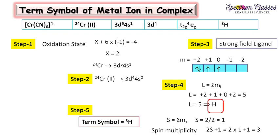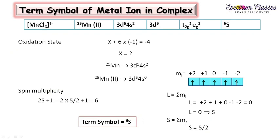The next example is MnCl₆⁴⁻. Cl has a −1 charge, so X + 6×(−1) = −4, giving X = +2; manganese is in the second oxidation state. Manganese (element 25) has configuration 3d5 4s2. In the second oxidation state, two electrons are removed from the s orbital, leaving 3d5. We then consider whether it is strong field or weak field — it is a weak field ligand.